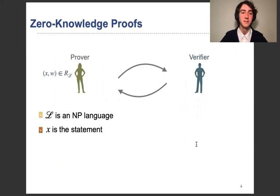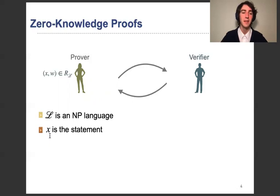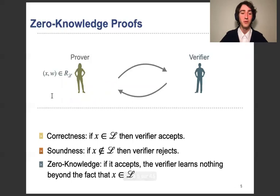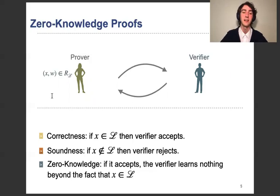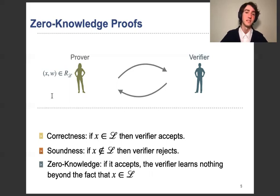Zero-knowledge proofs are a protocol between a prover and a verifier with respect to an NP language L. We have one statement X, and the prover wants to prove that this statement X belongs to the language, and the prover has a witness. We want three properties: correctness — if the statement is in the language, the verifier should accept; soundness — if the statement is not in the language, the verifier should reject; and zero-knowledge — if it accepts, the verifier should not learn anything beyond the fact that X belongs to the language, so in particular you should not learn any information about the witness.